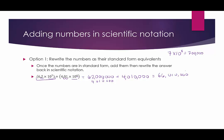That's the standard form equivalent, but when numbers are given in scientific notation we want the answer in scientific notation too. So we move the decimal point seven places back to get 6.601 times 10 to the seventh — moving the decimal back to create a number between 1 and 10.